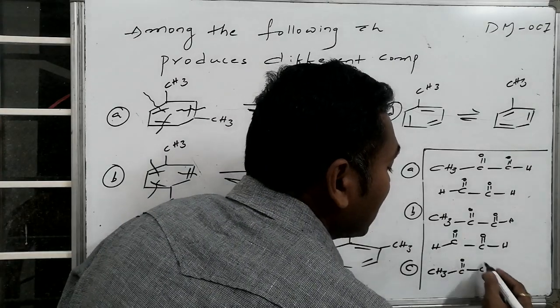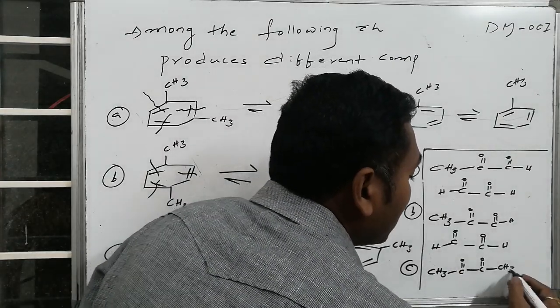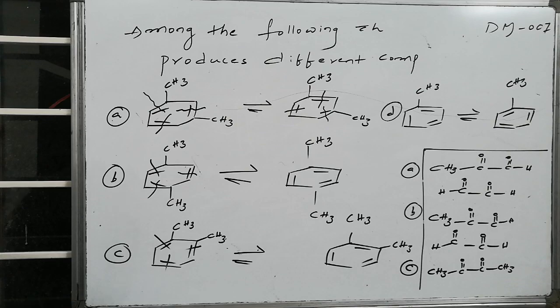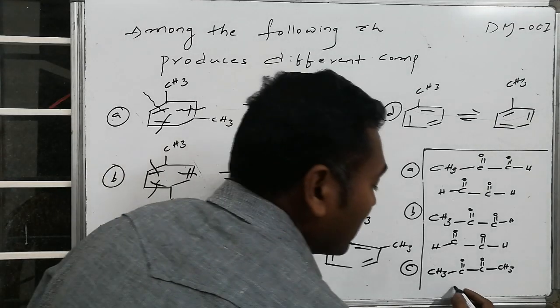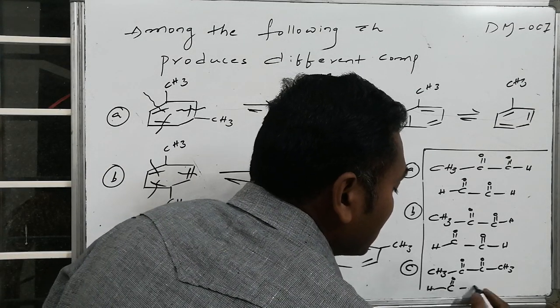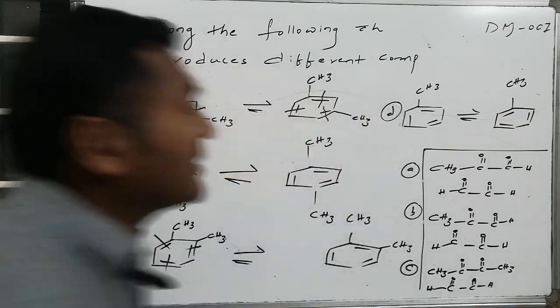For compound C (ortho-dimethylbenzene), ozonolysis results in dimethylglyoxal as one product, along with glyoxal — a distinct combination compared to the others.